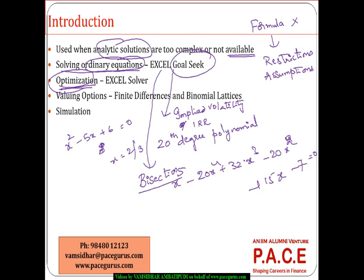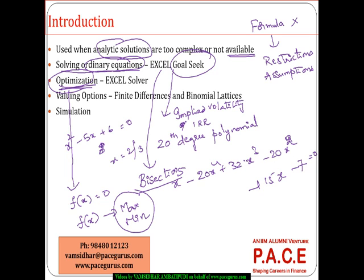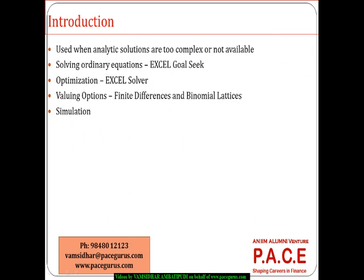In some cases we require optimization methods, meaning we are not solving for f(x) equal to 0, but solving in such a way that f(x) has to be maximum or minimum. We don't know what that maximum or minimum value is, but we want to maximize or minimize it. Those kinds of problems are called optimization problems. Direct explicit formulas will not exist for them — they are more iterative and repetitive processes. Microsoft Excel has a built-in package called Solver which addresses those things.